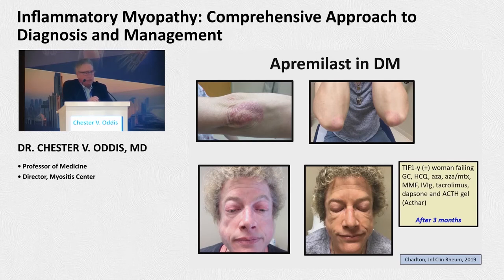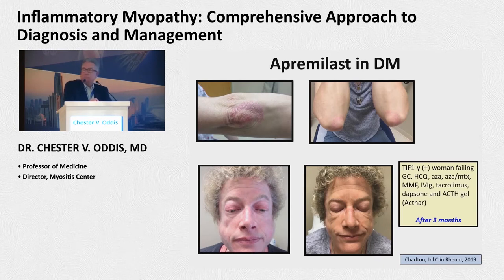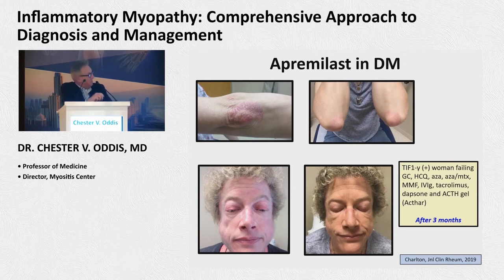I had a patient with refractory skin disease and the TIF-1 gamma autoantibody — look at everything she failed, mostly because of her skin. I had the opportunity to use apremilast in this patient, and after three months, and I just saw her two weeks ago — she's been on apremilast for over three years. That's the only drug that has controlled her scalp, facial, and elbow manifestations of her rash, and in fact it's the only medication she's taking now. We published this as a case report last year.